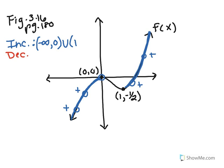The decreasing portion is between the maximum and minimum, where all slopes are negative. So the decreasing interval is (0, 1), non-inclusive. That's how we determine whether a function is increasing or decreasing from its graph.